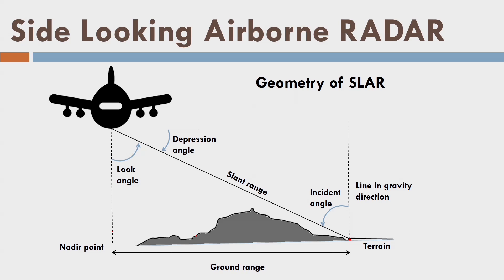The incident angle is formed between the radar line of sight and the local vertical at the terrain point. In case of airborne radar, the look angle is equal to the incident angle. But in the case of spaceborne radar, the curvature of the earth is very prominent, and as a result the incident angle is not equal to the look angle — we must consider the curvature of the earth to calculate the incident angle.